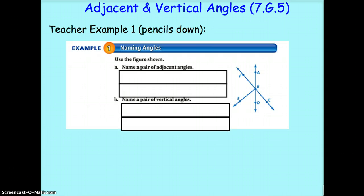Okay, let's take a look at teacher example 1. As you know, that means pencils down, you're just following along. Naming angles. Use the figure shown and name a pair of adjacent angles. Now remember, adjacent angles have to be angles that share one side has to be the same, and they have to have the same vertex.